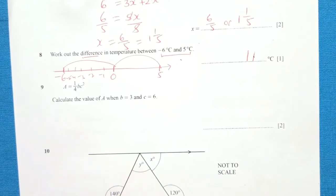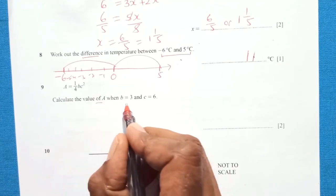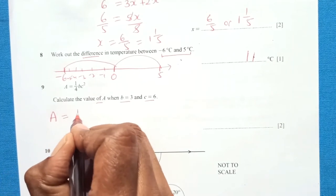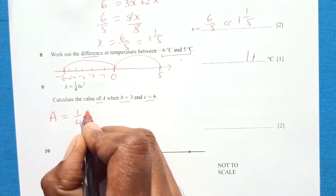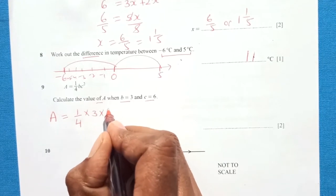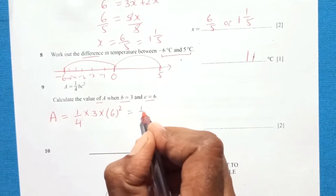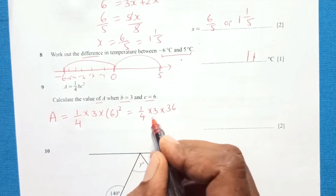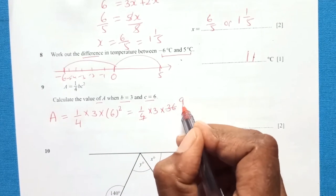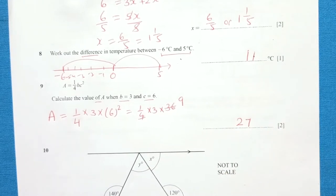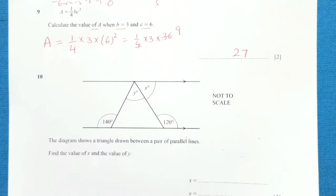Question 9: a = (1/4)bc². Calculate the value of a when b = 3 and c = 6. Replace the values: a = (1/4) × 3 × 6² = (1/4) × 3 × 36 = (1/4) × 108. That gives 27. So the final answer is 27. You can also use a calculator for this.